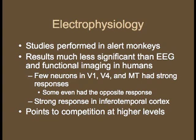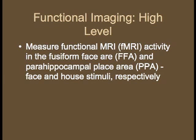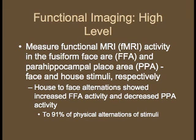To study the neural correlates of binocular rivalry in higher-order areas, Tong et al., 1998, performed rivalry studies using house and face stimuli. They measured fMRI activity in the fusiform face area and parahippocampal place areas of the extrastriate cortex. These regions respond strongly to face and house stimuli, respectively. They found that house-to-face rivalry alternations showed increased FFA and decreased PPA activity to 91% of physical alternations. Thus, rivalry has occurred by this point.